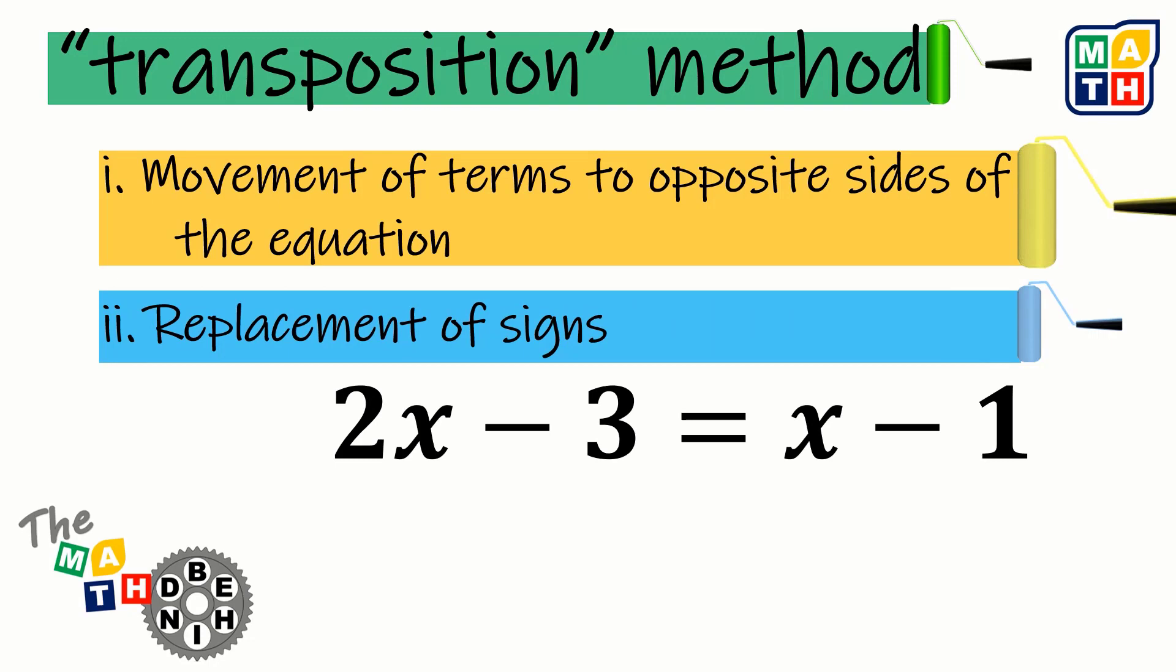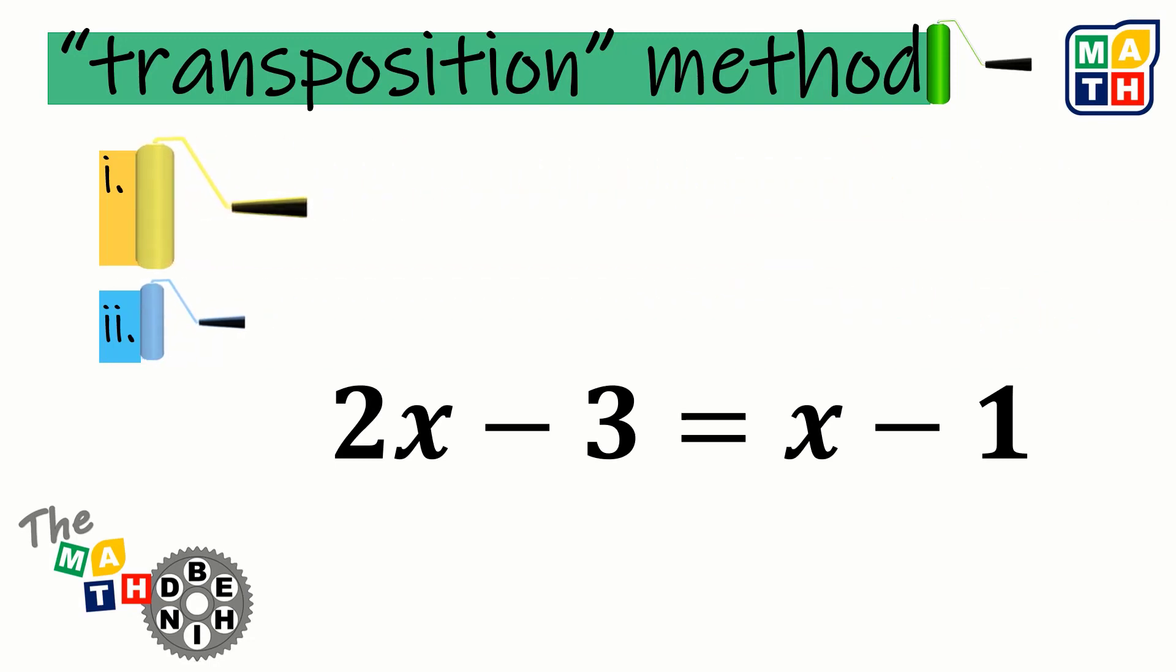Consider this equation. We can move the negative 3 to the right-hand side of the equation. And by doing that, we're changing the sign to positive. As for x, we could also move it to the left-hand side and change the positive x into negative x.